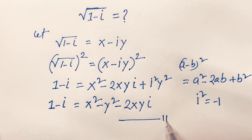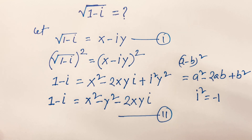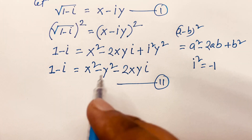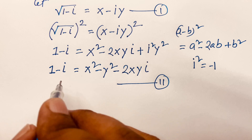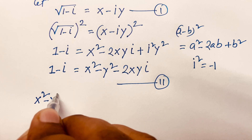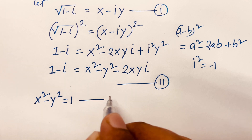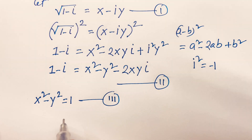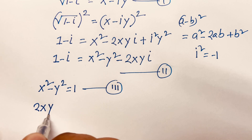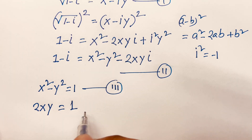That is the second equation and this is the first equation. Now, if I compare the real part and imaginary part, I can say x squared minus y squared equals 1, and 2xy equals 1, with the minus signs cancelling.